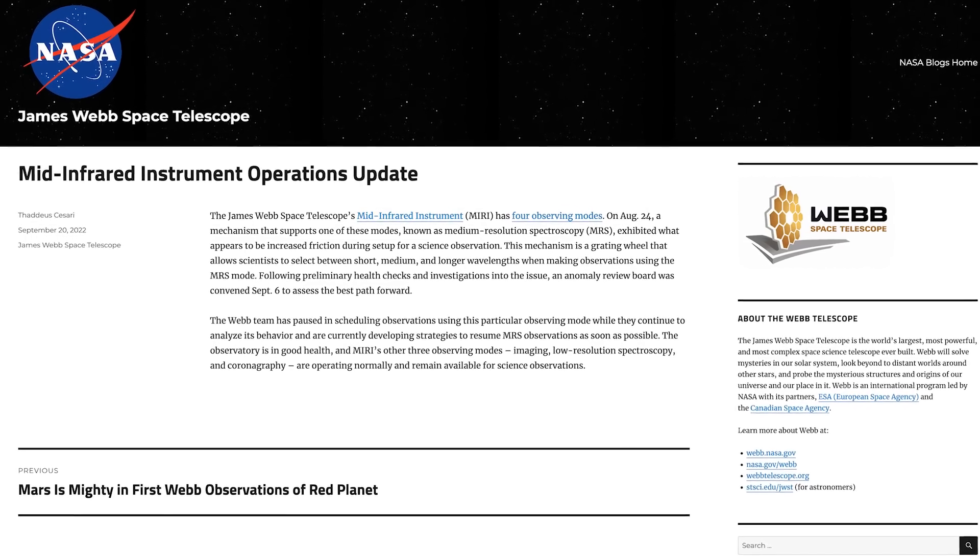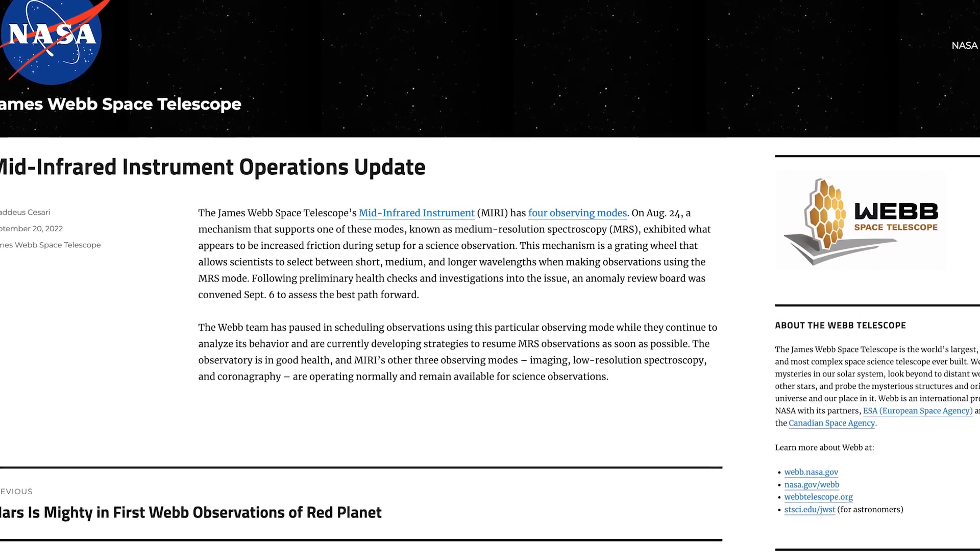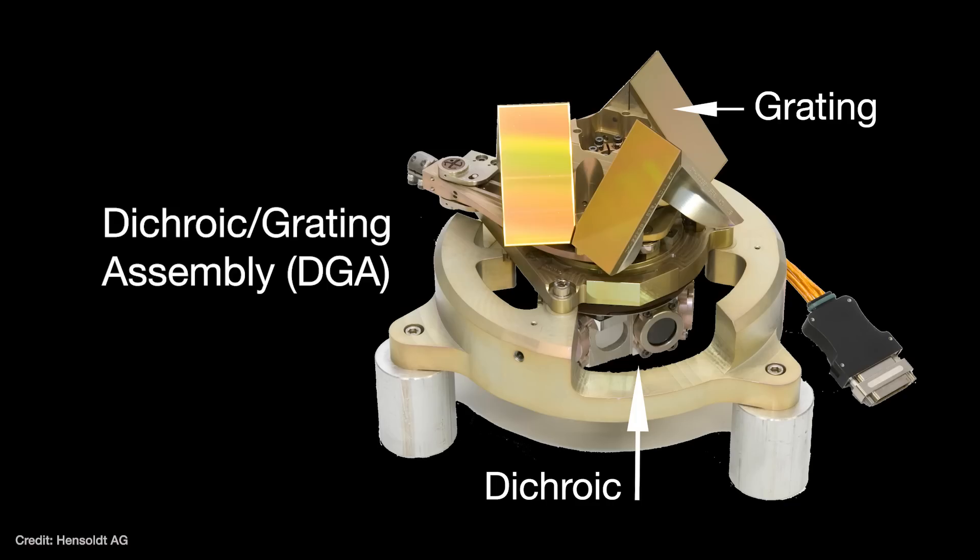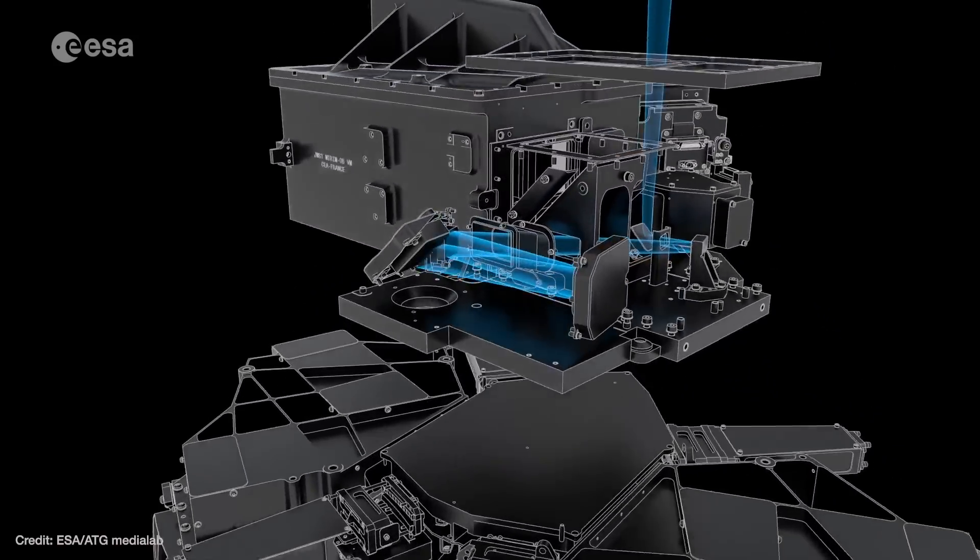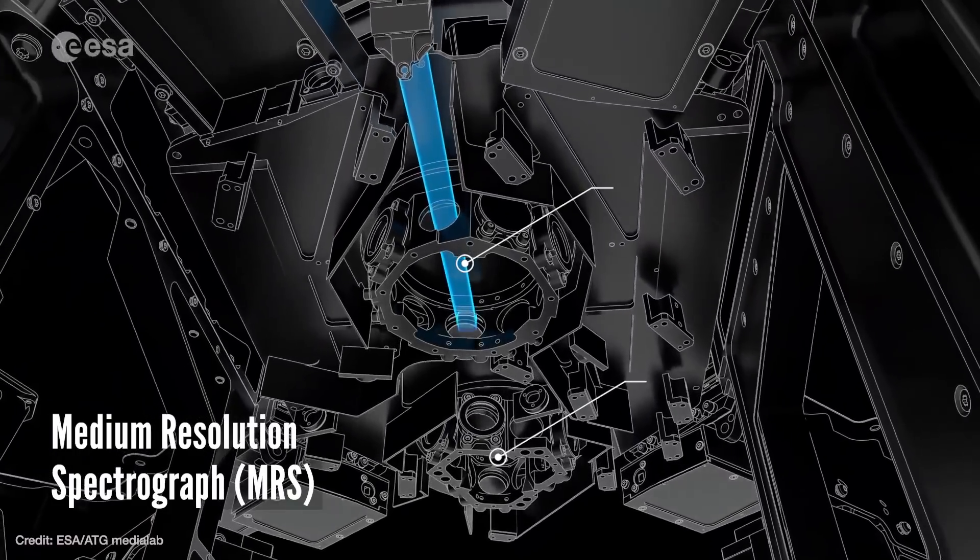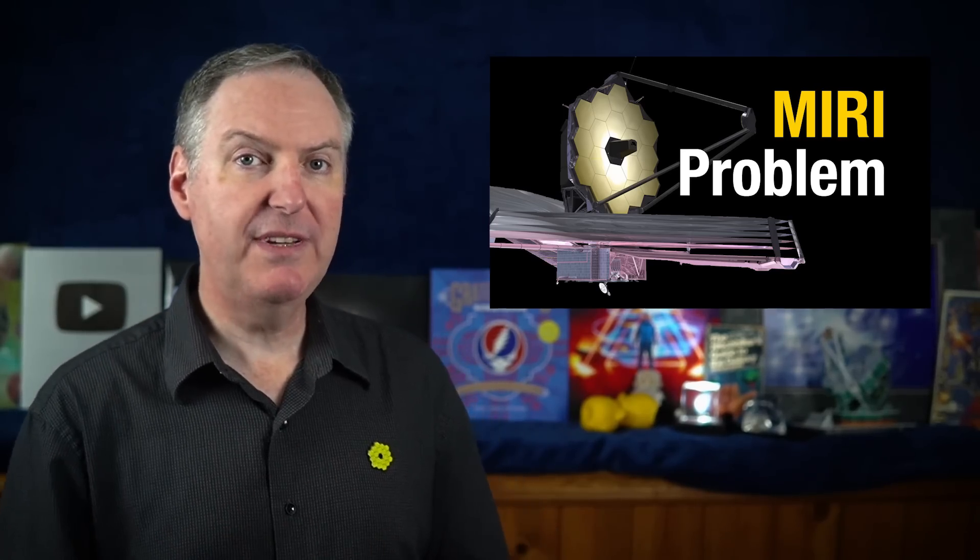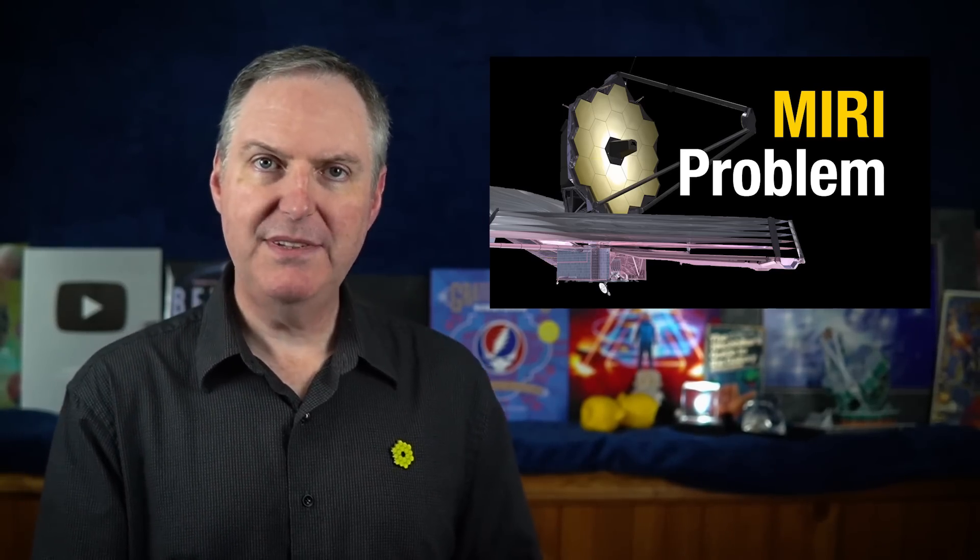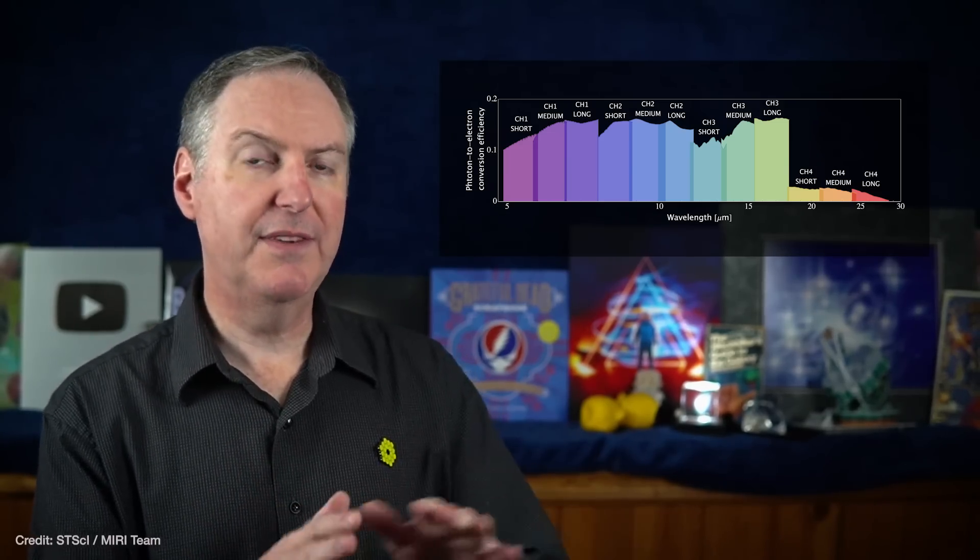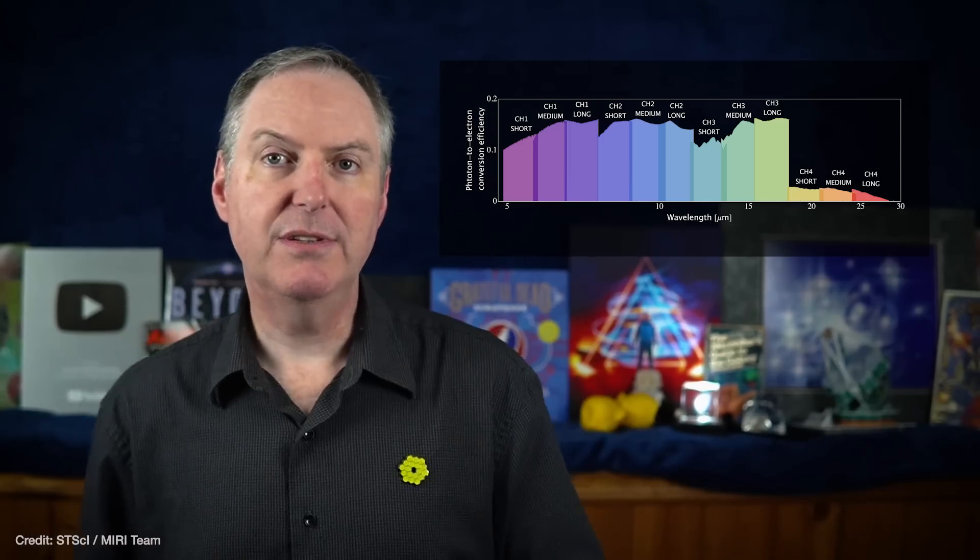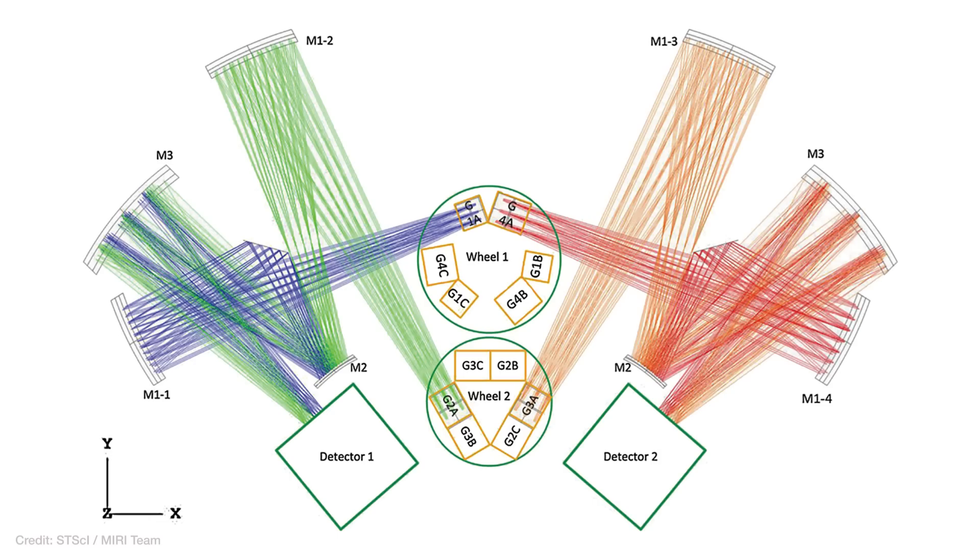In August, one of MIRI's grating wheels started to register some higher-than-expected friction whenever it was rotated. These wheels are called dichroic grating assemblies, or DGAs. They rotate to present different combinations of beam splitters, the dichroics, and diffraction gratings that route the light into the four different channels of MIRI's medium-resolution spectrograph, or MRS. I talked about how the MRS works in some detail in my previous video about this problem. But to recap, the DGA wheels rotate so the four channels record one-third of the total spectrum at a time. With each rotation, the rest of the spectrum is filled out. When one of the two DGA wheels showed more friction than expected, the MIRI team suspended the use of MRS while they analyzed the problem.